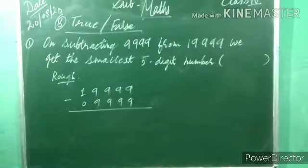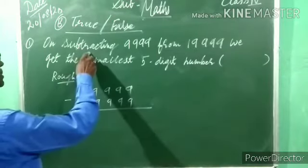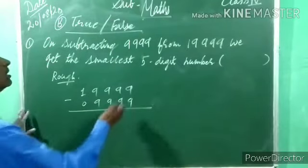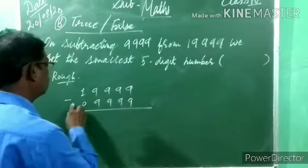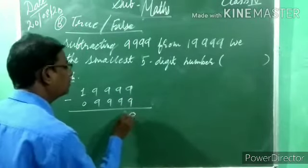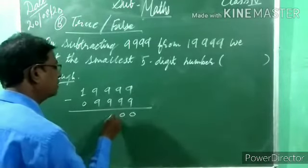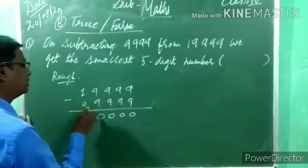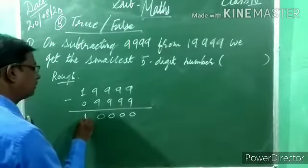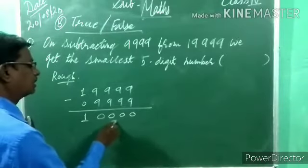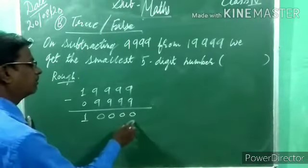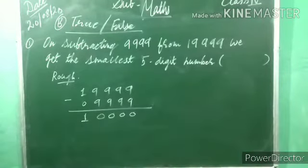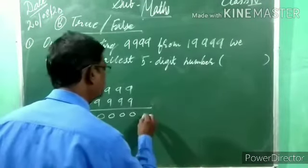19,999 minus 9,999: nine minus nine is zero; nine minus nine is zero; nine minus nine is zero; nine minus nine is zero; one minus zero is one. We get ten thousand — a five-digit number. Ten thousand is the smallest five-digit number.